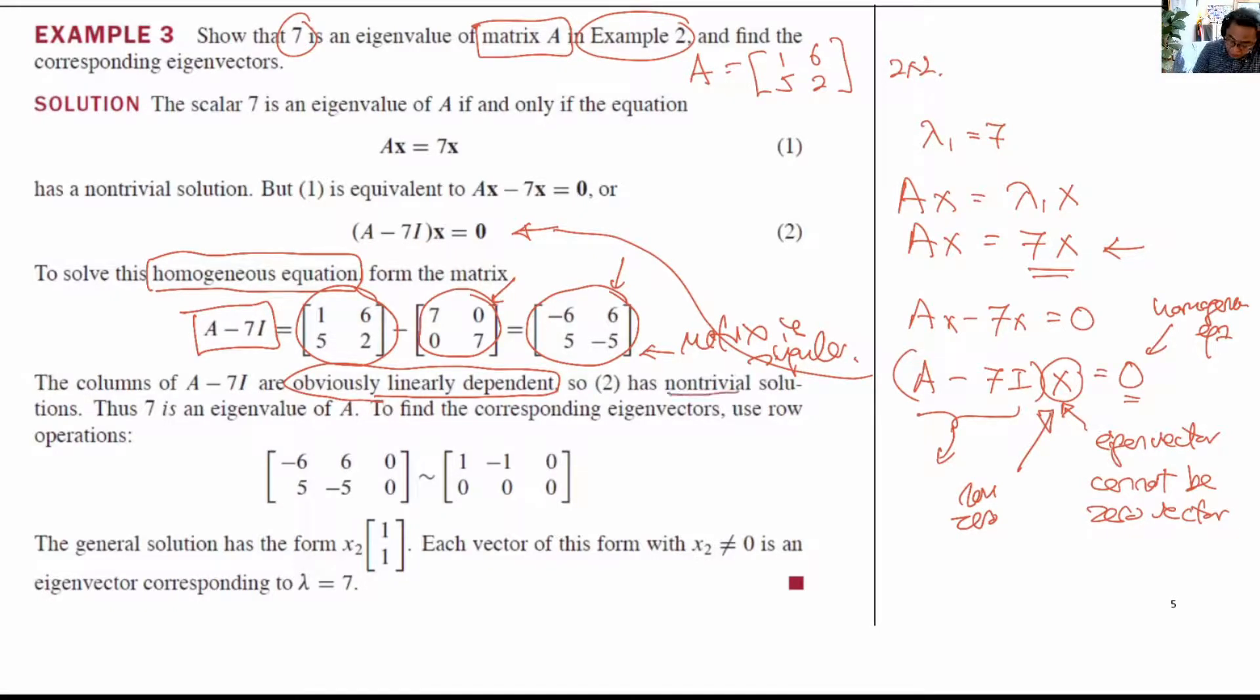And therefore it has non-trivial solution, meaning non-zero x, such that (A minus 7I) times x equals the 0 vector. So this proves that 7 is an eigenvalue of A. So we can stop here now for the first part: show that 7 is an eigenvalue of matrix A.